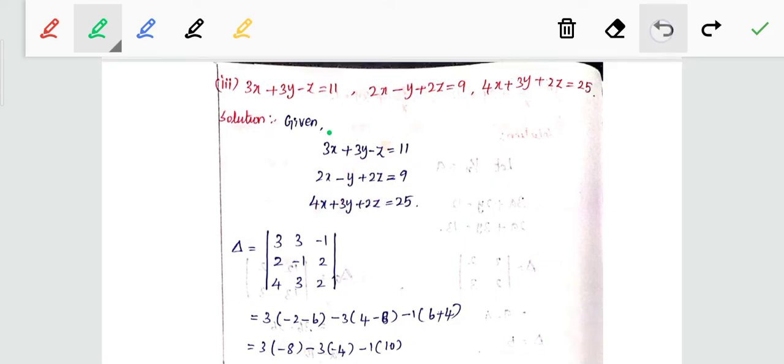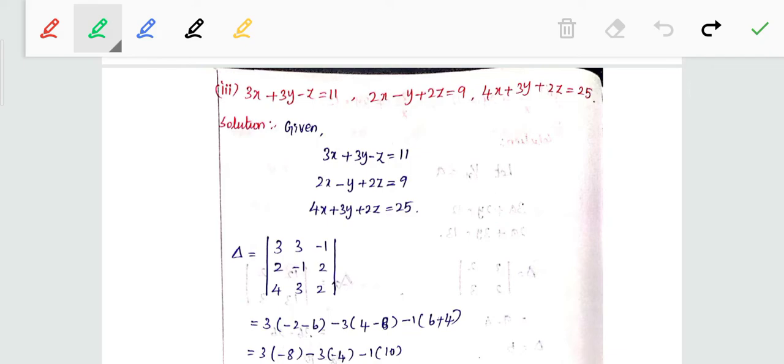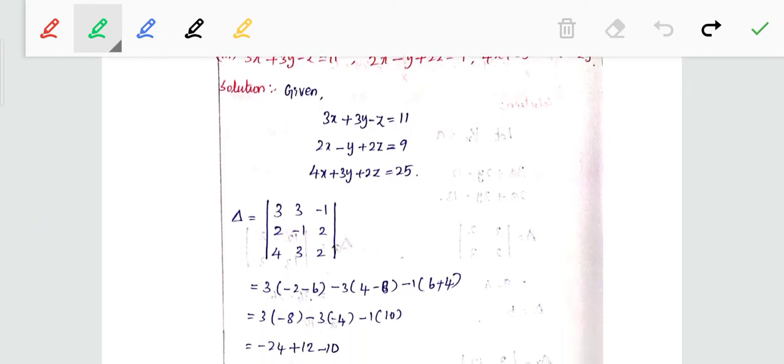3, 3, minus 1; 2, minus 1, 2; 4, 3, 2. First row expansion: 3 times corresponding row column, 2 minus 2, minus 3 times corresponding row column.